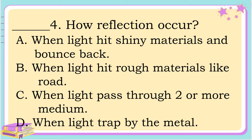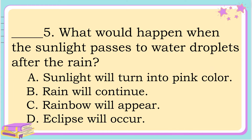Number 4. How does reflection occur? A. When light hits shiny materials and bounces back. B. When light hits rough materials like road. C. When light passes through two or more media. Or D. When light is trapped by the metal. The answer is letter A: when light hits shiny materials and bounces back.